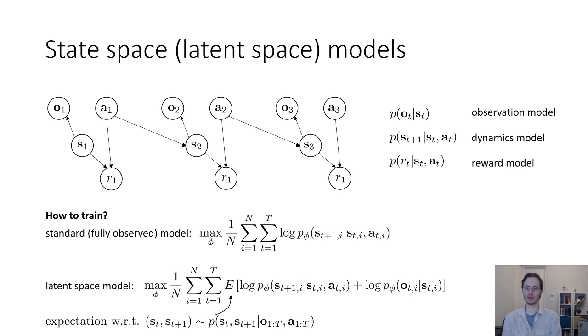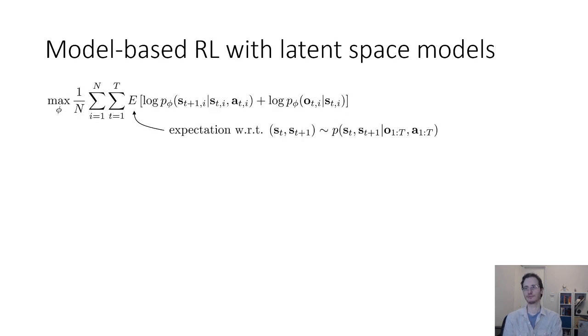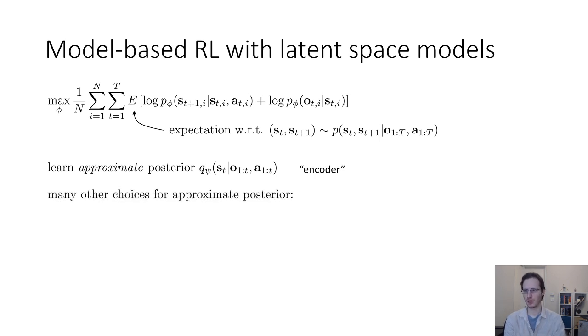So, we would need some sort of algorithm that can compute a posterior distribution over states given our images and then estimate this expected log likelihood using states sampled from that approximate posterior. So, the expectation is taken with respect to P of st comma st plus 1 given O1 through t and A1 through t at every time step. So, how can we actually do this? Well, one thing we could do is we can actually learn an approximate posterior and I'm going to say this approximate posterior parameter psi and I'm going to note a q psi.